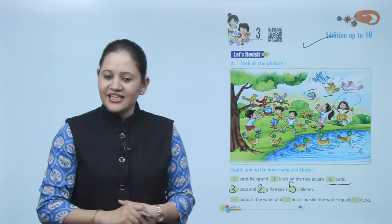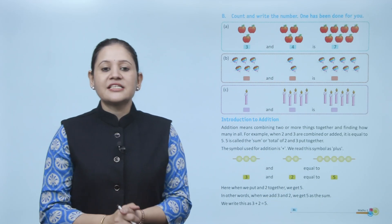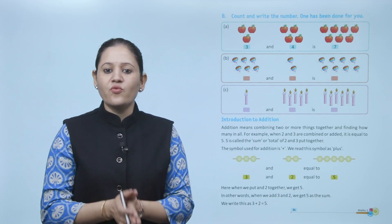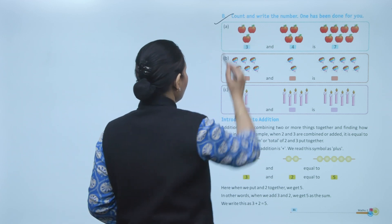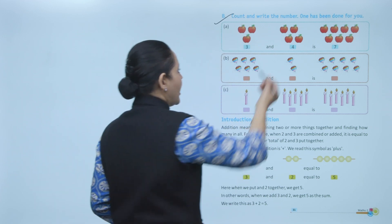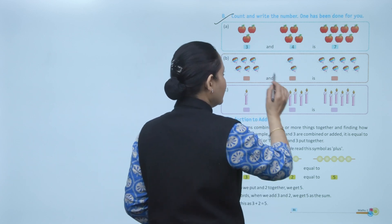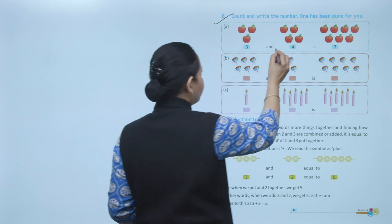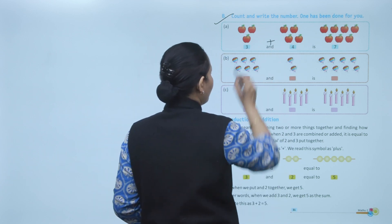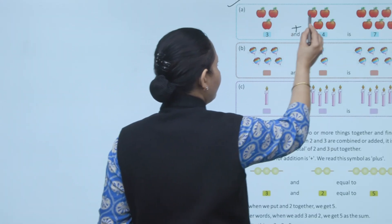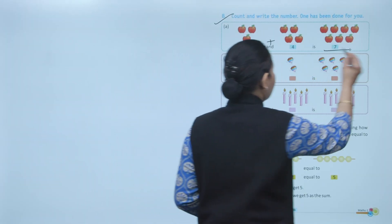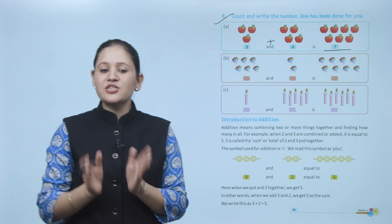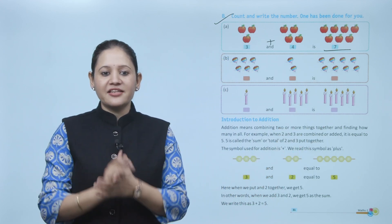Next, count and write the number — one has been done for you. Here three apples and here four apples, total three plus four. One, two, three, four, five, six, seven — total seven apples. First you have to count the number of objects and then add them.